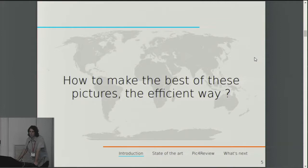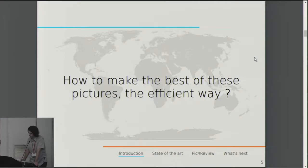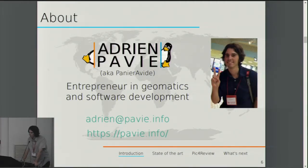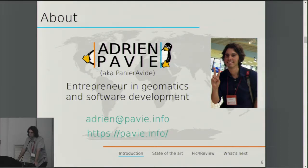But how can we make these pictures be used in an efficient way in order to improve the data we have in OpenStreetMap? Before talking more about this, I will present myself. I'm Adrien Pavi, also known as Pani Avid on OpenStreetMap. I'm a contributor for eight years on the OpenStreetMap project, and I'm also an entrepreneur in geomatics and software development, based in France.